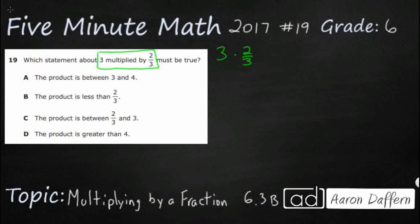Whenever you come across a whole number like 3 and you want to turn it into a fraction, it's pretty simple — you simply make it over 1. So that's 3 over 1, or 3 wholes. Any whole number can be turned into a fraction by just giving it a denominator of 1. So now let's multiply straight across: 3 times 2 equals 6, and 1 times 3 equals 3.